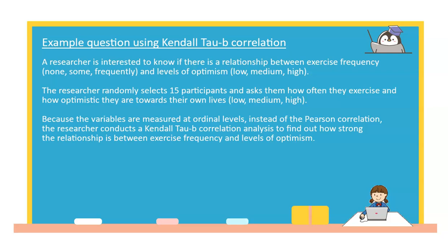Because the variables in this context are measured at ordinal levels, instead of the Pearson correlation, the researcher conducts a Kendall Tau-B correlation analysis to find out how strong the relationship is between exercise frequency and levels of optimism.